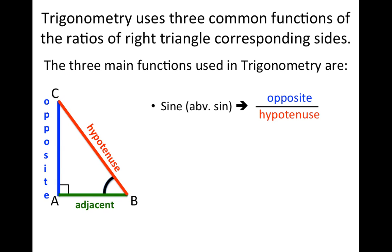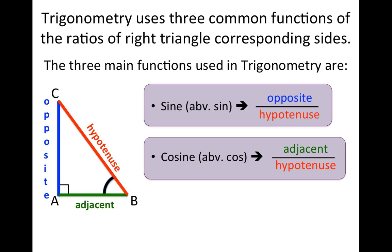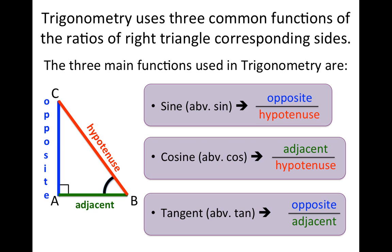So the sine of angle B is the opposite over hypotenuse. We also have cosine, abbreviated COS — cosine is the adjacent over the hypotenuse. And then finally we have tangent, and tangent is the opposite over the adjacent. So any two sides of a triangle have a trigonometric function for them: opposite and hypotenuse → sine; adjacent and hypotenuse → cosine; opposite and adjacent → tangent.